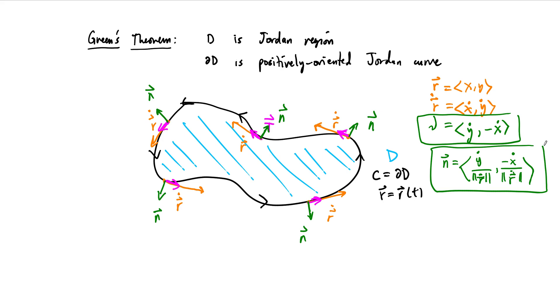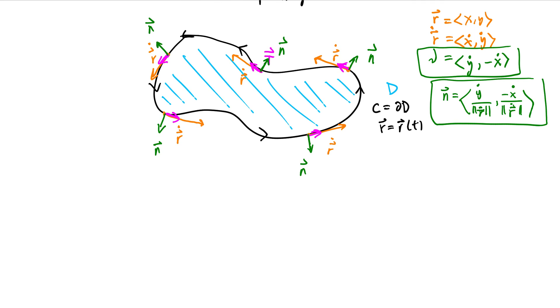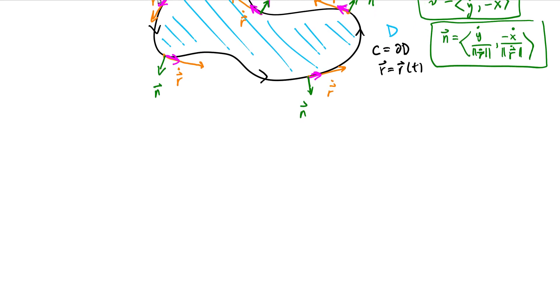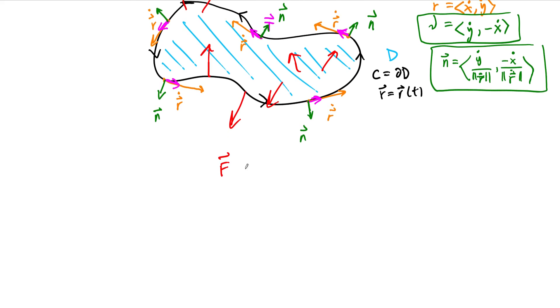The next question then is, what are we going to do with this? Our n is y dot over length of R dot, negative x dot over length of R dot. Remember in Green's theorem, we also have yet another vector field, defined at every point along the surface and the curve, everywhere on D and in particular along the curve. We have this vector field F, whose component functions are P and Q. And we know that for Green's theorem to be satisfied, that P and Q have continuous first partial derivatives. So P and Q are differentiable. That makes the vector field itself smooth.